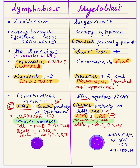The characteristic stains for the well-differentiated myeloblast are myeloperoxidase and Sudan Black B. Both of these stains are negative for lymphoblasts. This is another very important differentiating point.